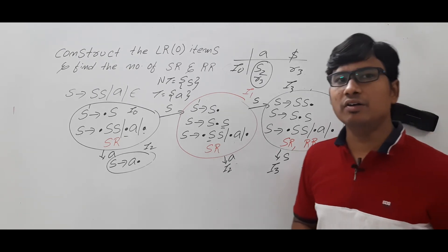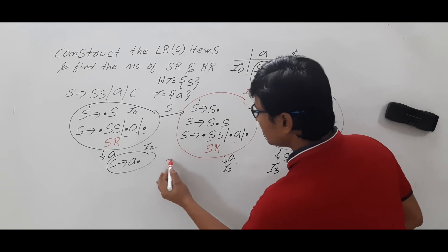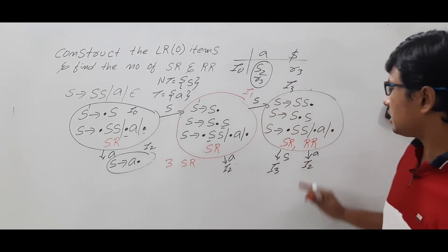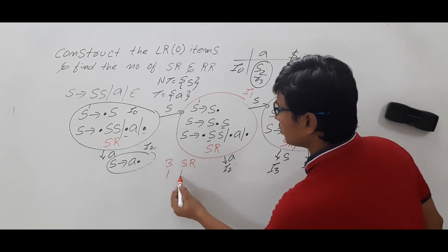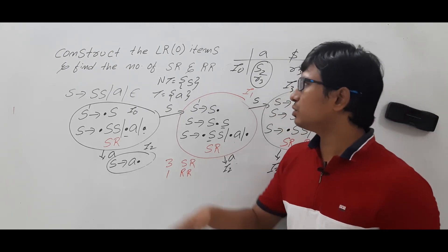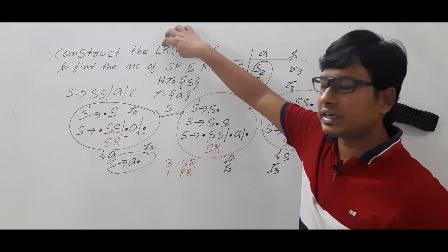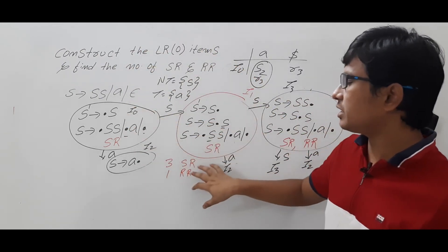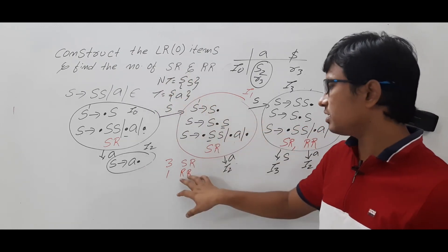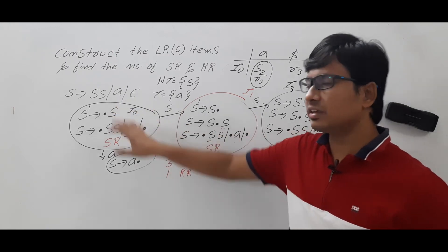Now count the number of SR conflicts: one, two, three — three SR conflicts are there. How many RR conflicts? One RR conflict is there. So for the given grammar, we have constructed the LR0 items and identified that three SR conflicts and one RR conflict exist.